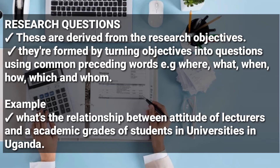Research questions are derived from research objectives. They are formed by turning those objectives into questions using common preceding words such as what, when, where, how, or which. There is a need to ensure that the question formed is what the researcher wants to address, and the question must be logical and sensible when read. Research questions must also be written in the same order in which the research objectives are written.